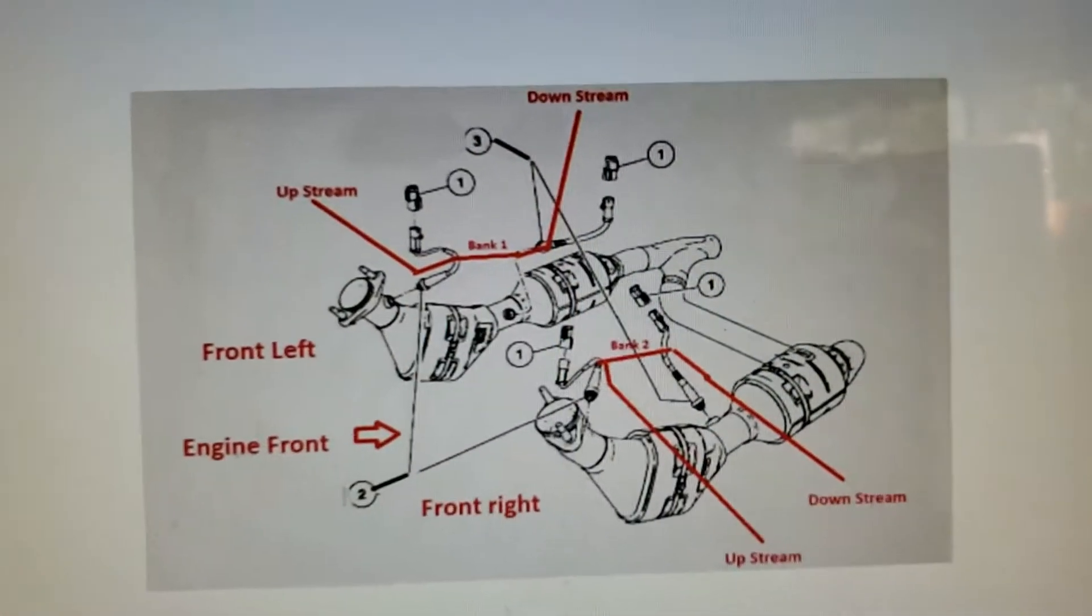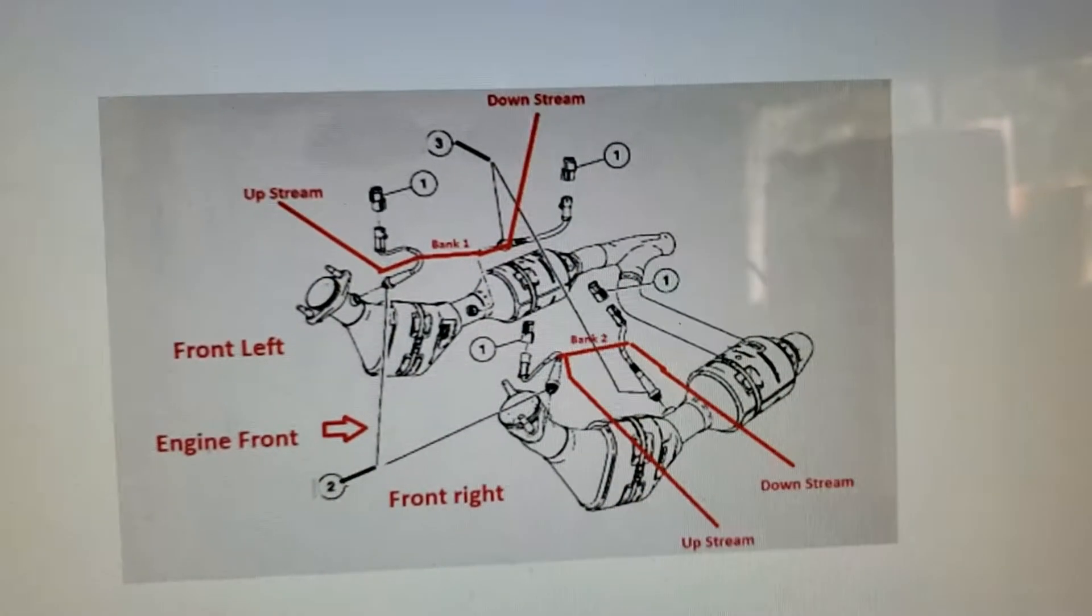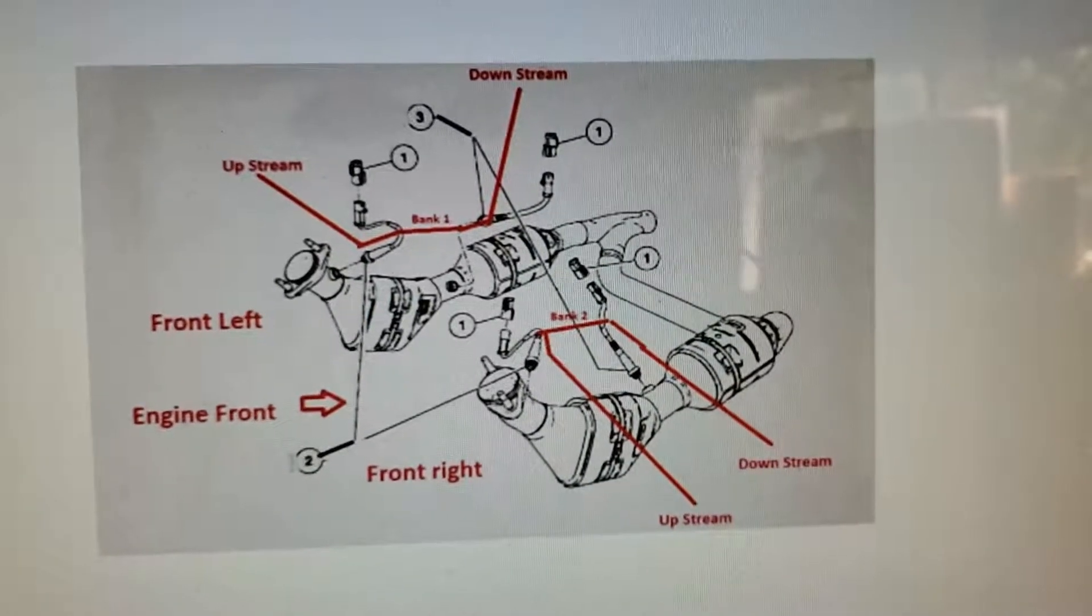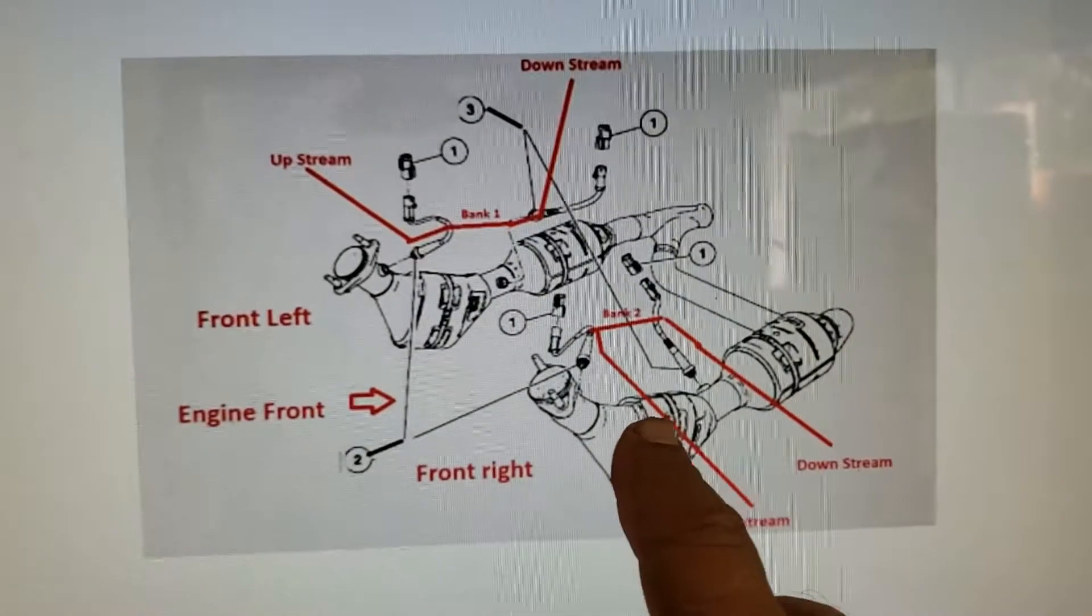Bank 1 will be, if you stand in front of the truck, on your left side. If you look at your firing order for your engine, it will be like 1, 2, 3, 4. And then the other side, which is 4, 5, 6, 8, is on your right side.